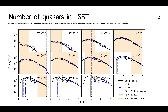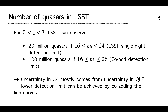However, for the fainter bins where the data is absent, we need to extrapolate the luminosity functions to get the estimates. Overall, we found that for redshift up to 7, within the LSST single detection limit, we expect 20 million quasars. And if LSST can co-add the data and detect objects as faint as 26 magnitude, then we expect to discover 100 million quasars. There are some uncertainties in these numbers, mostly from the luminosity functions, and by co-adding many visits, LSST could achieve lower detection limits and discover more binary candidates at lower masses.